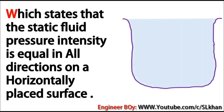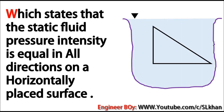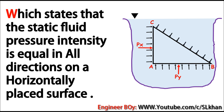For better understanding, if you look at the diagram, there is a right angle triangle inside the static fluid, which represents a horizontally placed surface, or you can say just a plate. It's shown vertical in the diagram because it's not possible to represent it in a horizontal position. Just assume this right angle triangle is a horizontally placed plate. The intensity of pressure at the base is PY, at the perpendicular it is PX, and on the inclined side the intensity of pressure is PZ.